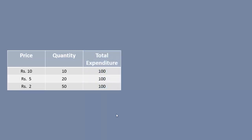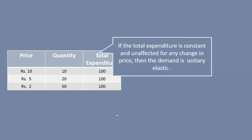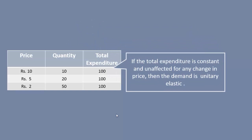This is the total expenditure. Examine the movement in the price and the changes in the total expenditure — the total expenditure is unaffected. We can conclude that if the total expenditure is constant and unaffected for any change in price, then the demand is unitary elastic.